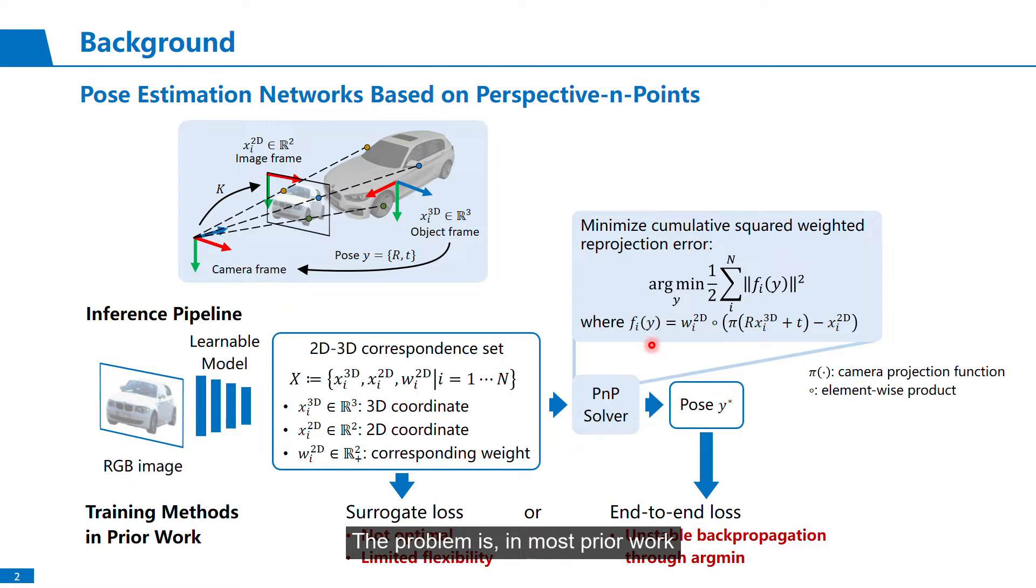The problem is, in most prior work, the network is trained by supervising the intermediate variables by a surrogate loss, which is not optimal for best pose accuracy. Some have also investigated end-to-end pose loss that backpropagates through the PnP solver, but the training is very unstable due to the alchemy optimization layer, since it's generally non-differentiable.